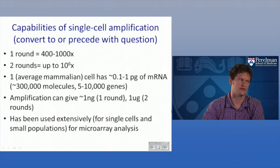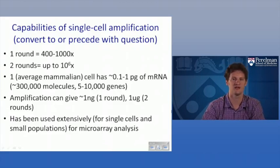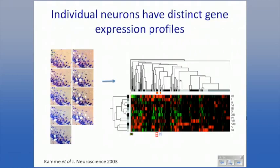For RNA-seq analysis, the amount of input required to make libraries has historically been artificially high, so most single-cell RNA-seq experiments published have used PCR-based amplification. But even by microarray, people were studying individual neurons as early as 2003 — using laser capture microdissection to pick up neuron cell bodies one at a time and do microarray-based expression profiling. The bottom line is that each of these neurons has significant differences in gene expression, which is not surprising given what we know about the diversity of the nervous system.